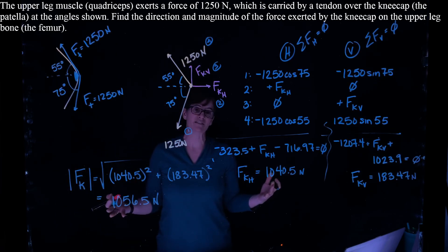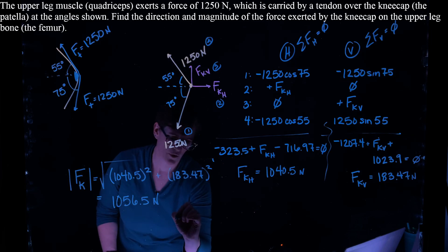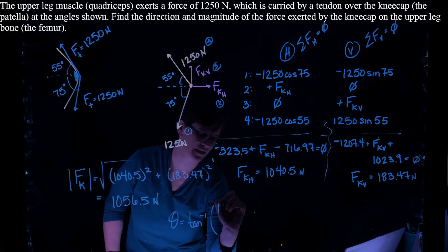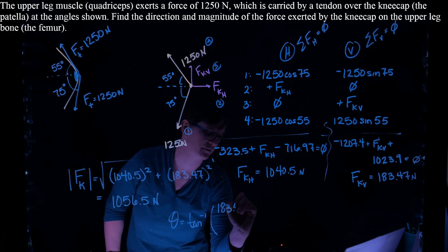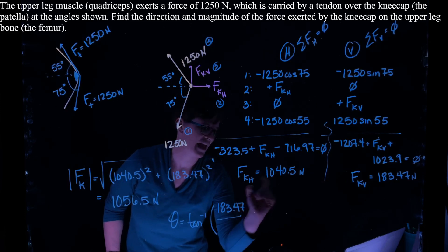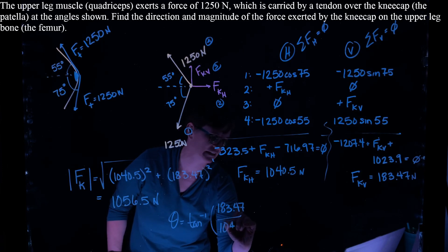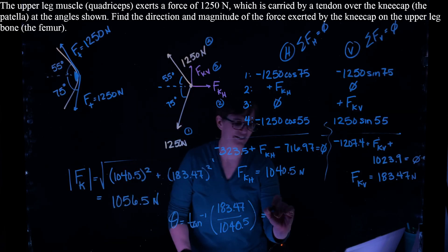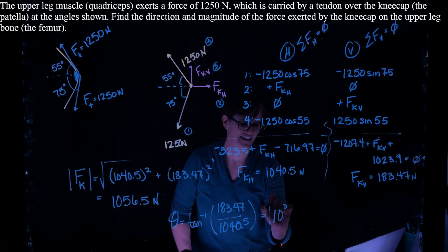And then, of course, I also need to find the angle. So we know that the angle is equal to the inverse tangent, my y component, 183.47, over my x component of 1040.5. And that gives me an angle of 10 degrees.